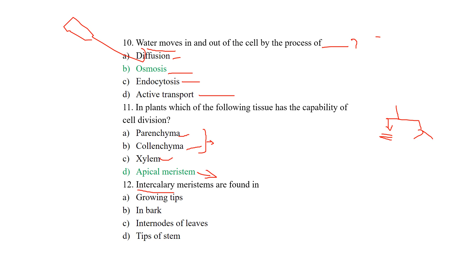The next question: intercalary meristems are found in? There are three types of meristematic tissue: apical meristematic tissue, lateral meristematic tissue, and intercalary meristematic tissue. The options are growing tips, in bark, internodes of leaves, and tips of stem. Growing tips and tips of stem correspond to apical meristem. Lateral meristem is present in bark. So the remaining and correct answer is internodes of leaves — that is where intercalary meristem is found.